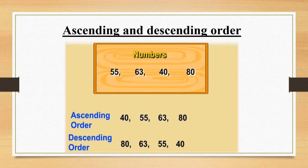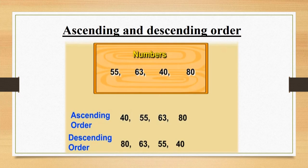Now let us solve some examples. The first one: write the following numbers in ascending and descending order. The numbers given are 55, 63, 40 and 80. In ascending order, first write the smallest number, that is 40, then bigger than 40 which is 55, then even bigger 63, and the biggest is 80. So ascending order: 40, 55, 63 and 80.